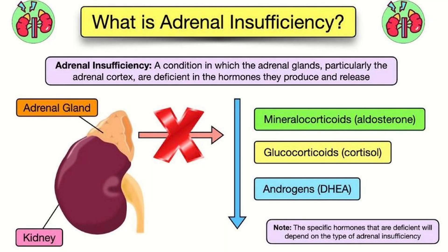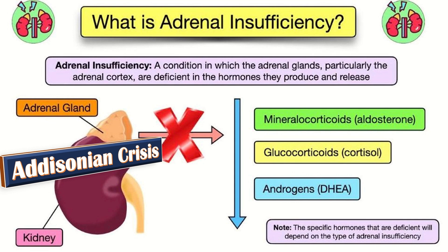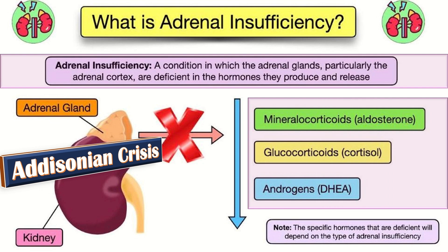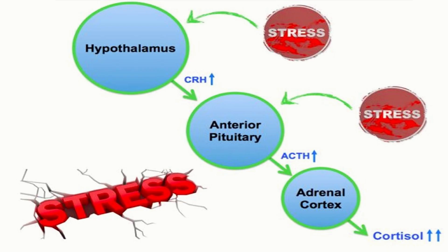Addisonian crisis, also called adrenal insufficiency, is a condition in which the adrenal glands — particularly the adrenal cortex — are deficient in the hormones they produce, including mineralocorticoids, glucocorticoids, and androgens. Patients with Cushing syndrome treated by corticosteroid withdrawal, adrenalectomy, or pituitary tumor removal are at risk. Most cases involve patients with known adrenal insufficiency who experience an acute stress event, do not adjust their corticosteroid dose, and quickly deplete cortisol stores, leading to addisonian crisis.